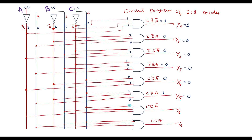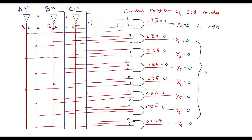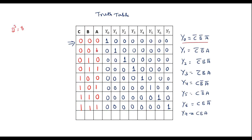For Y6 = C·B·Ā = 0·0·1 = 0, so Y6 is 0. For Y7 = C·B·A = 0·0·0 = 0, so Y7 is 0. When A=0, B=0, C=0, output line Y0 is high and all other values are 0. Similarly, for different values of A, B, C, the corresponding output line will go high.